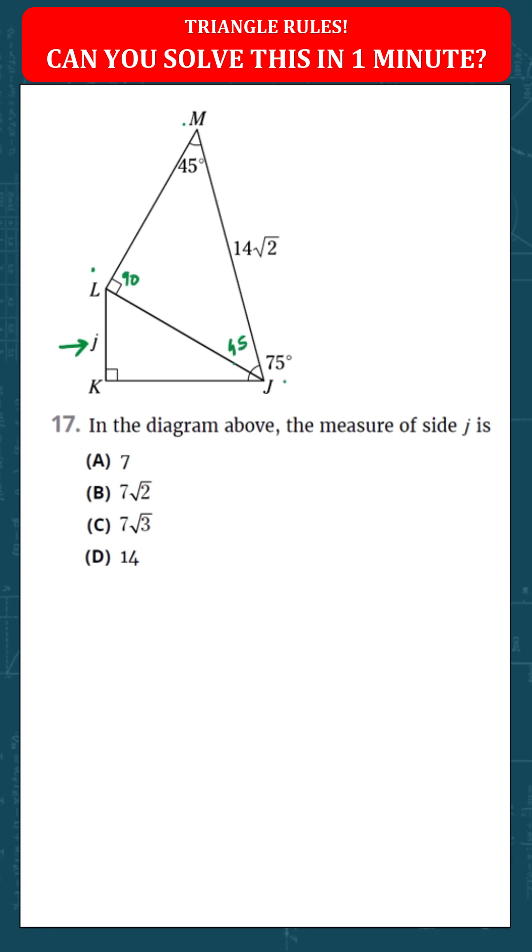And this angle will then be 45. 75 minus 45, this will be 30. You'll notice this will be your 60-90-30 triangle. Looking at this triangle first, 90-45-45, this side is 14 root 2. According to isosceles triangles, this side would have to be 14 and this side would have to be 14.